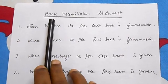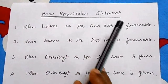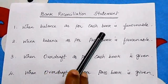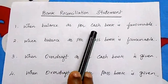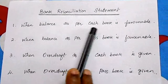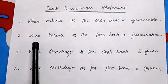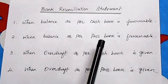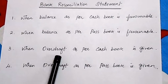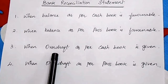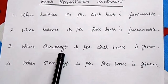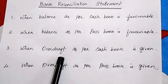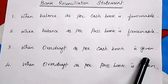In this video I am going to explain how to prepare a bank reconciliation statement in four different situations. The four methods are: first, when balance as per cash book is favorable; second, when balance as per pass book is favorable; third, when overdraft as per cash book is given — overdraft means excess of withdrawal over deposit, which is an unfavorable balance.